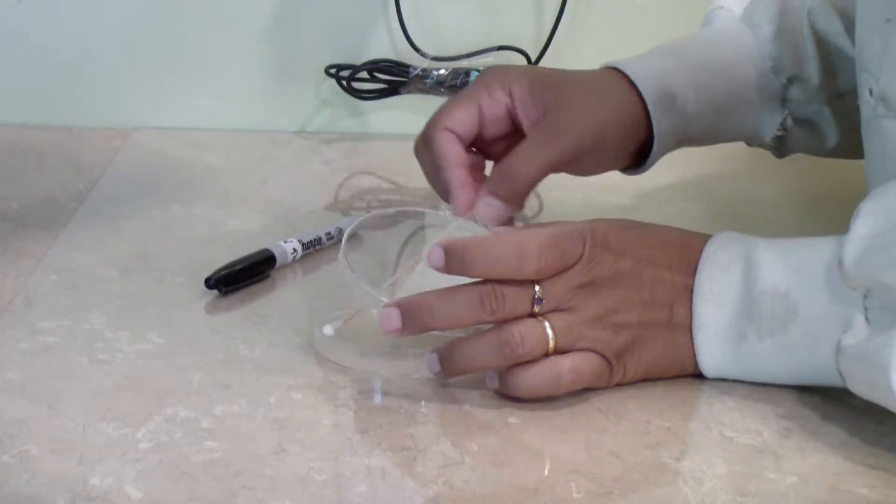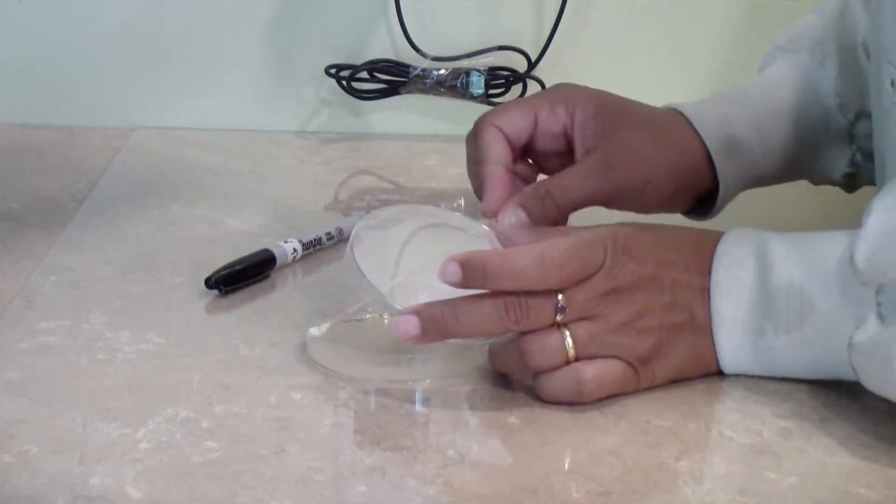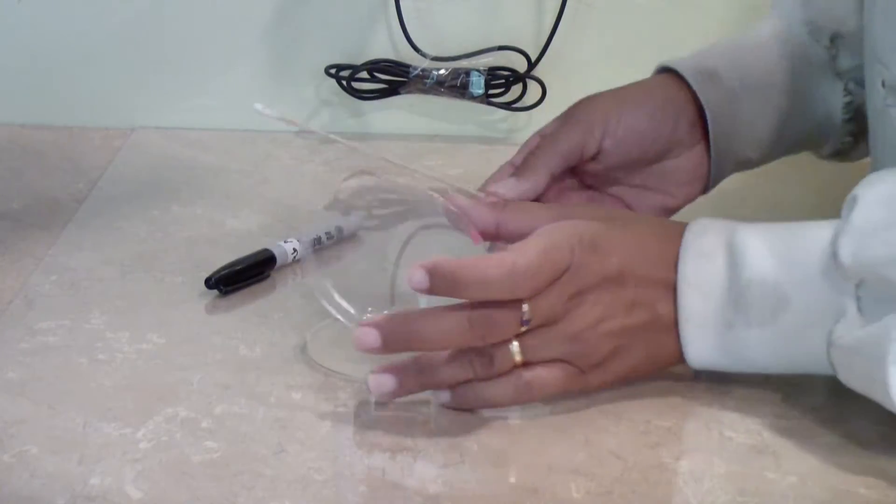Then rub the cotton swab over the surface of the TSA agar. Turn the plate over so you can reach all areas of the medium.